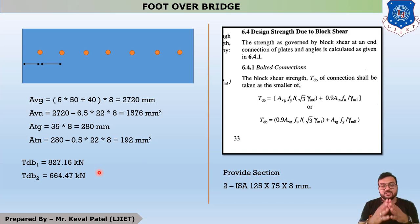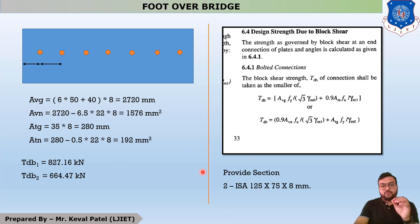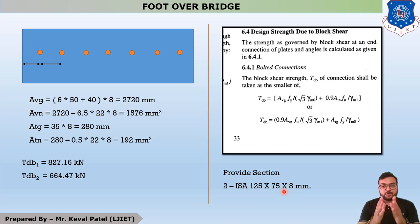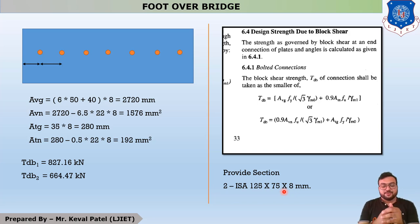Provide two Indian Standard Angles ISA 125×75×8 mm back-to-back connected with the gusset plate, with the shorter leg connected to the gusset plate. This is the end of today's session. In the next lecture we will start the design of the vertical member, beginning with the forces on the vertical member. Thank you.